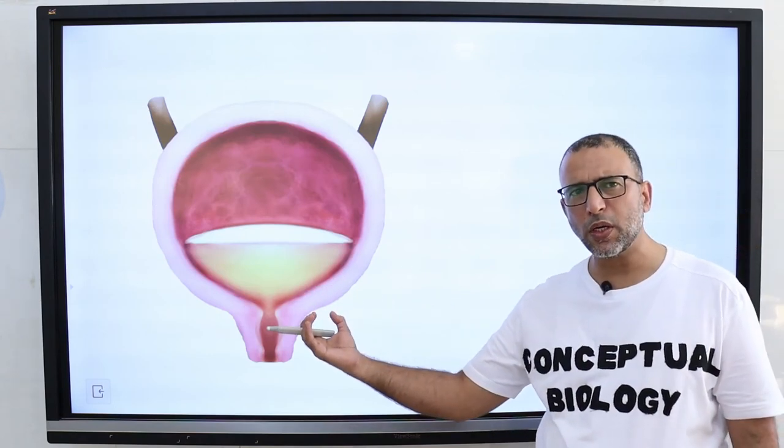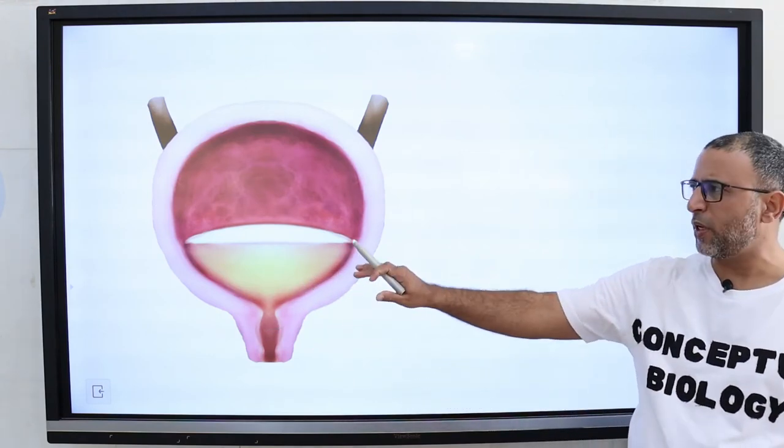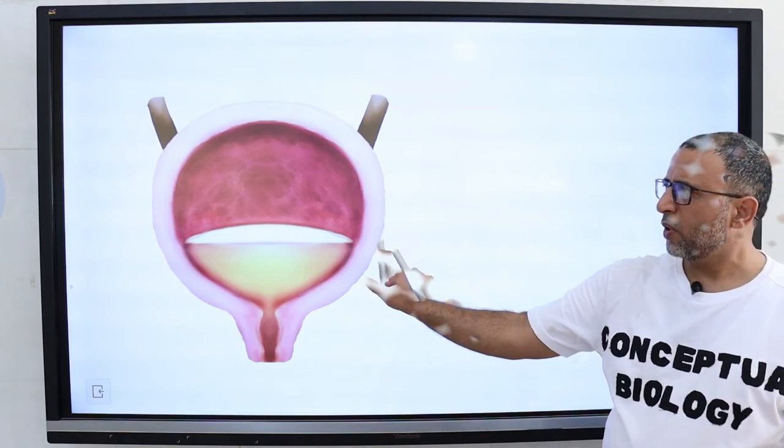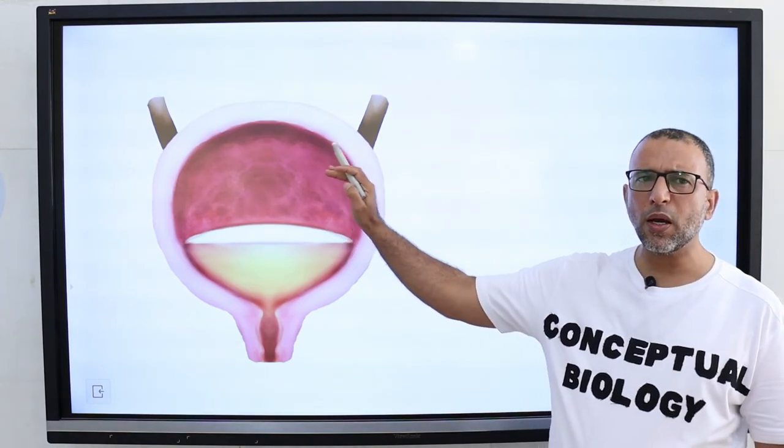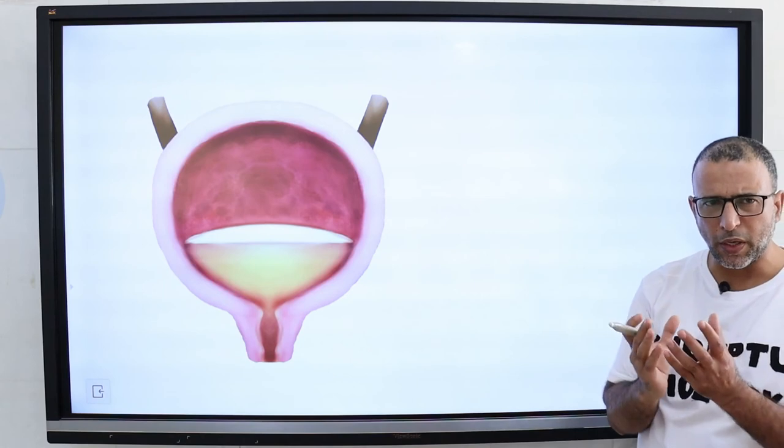The purpose of tight junctions is to keep liquid from escaping between cells and allow a layer of cells to act as an impermeable barrier.